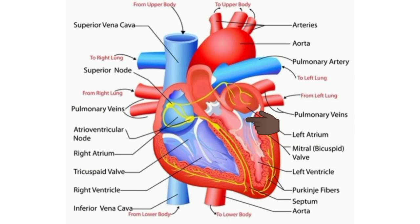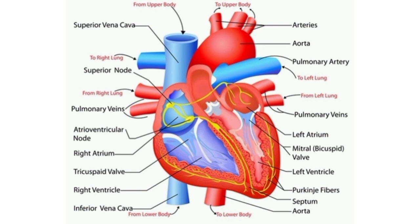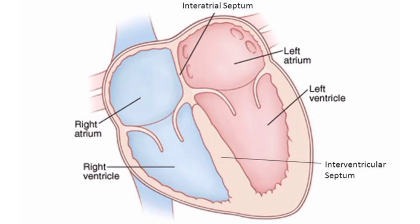The mitral valve is also known as the bicuspid valve. The wall of the left ventricle is very thick. The left ventricle pumps the arterial blood to the different parts of the body through the systemic aorta. Now let us talk about the septa of the heart.